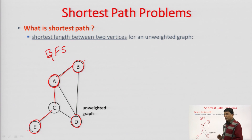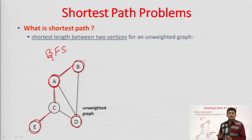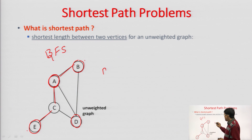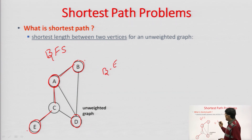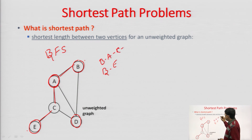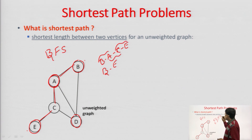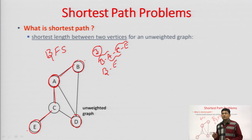In this graph, no weights have been assigned on the edges; we are considering that the cost of each edge is 1. For any path, for example b to e, to find out the shortest path between b and e, the path is b to a to c to e — the total number of edges involved is 3, and the total number of edges is telling you the shortest path.